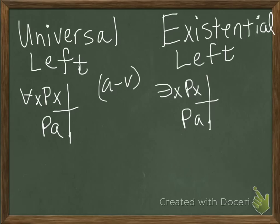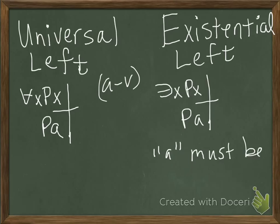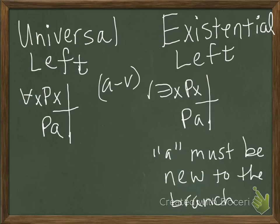However, there's going to be a restriction on existential left, just like there is on 'e out' in proofs. The restriction is basically the same: the letter we use to instantiate the formula must be a letter that is new to the branch. Just like in proofs, we're only going to instantiate the existential formulas once, so we'll check that off. However, we can do the universal formula more than once if we need to, so we put a plus next to it each time we instantiate it.